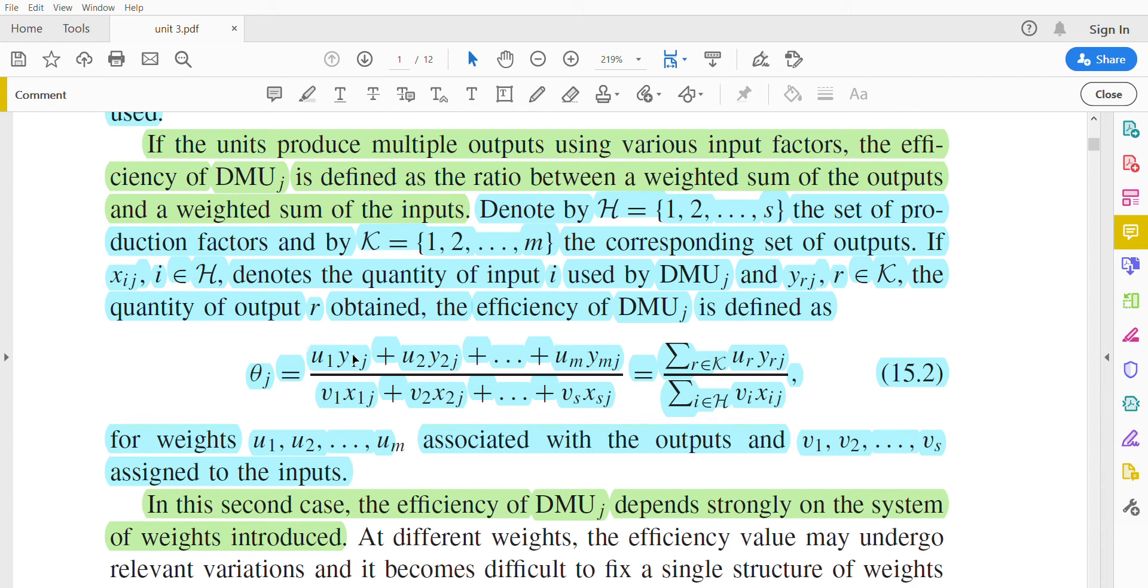We have to take the weights for the outputs and corresponding weights for the inputs too. For calculating the efficiency of the jth unit, the DMU is defined as θ_j equals u_1*y_1j + u_2*y_2j + ... + u_m*y_mj over the corresponding input terms.